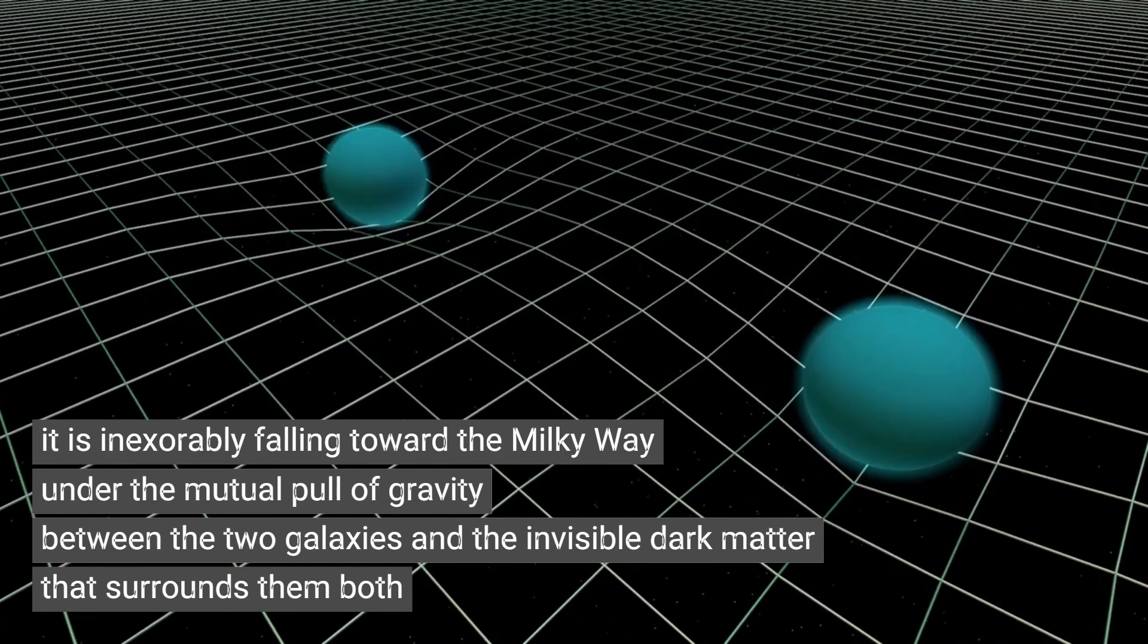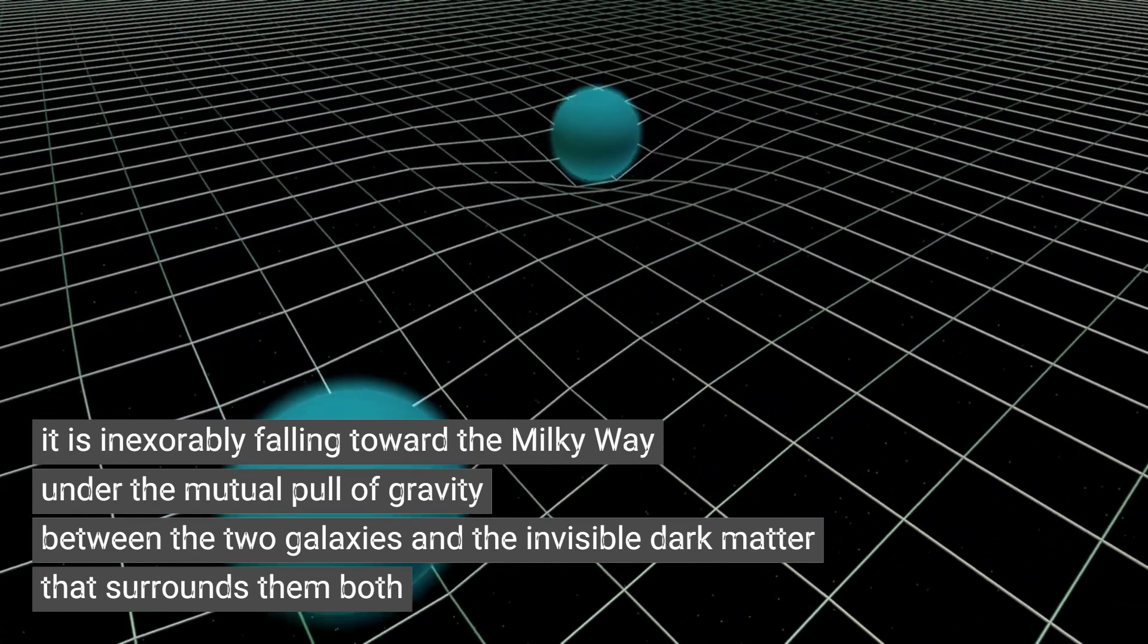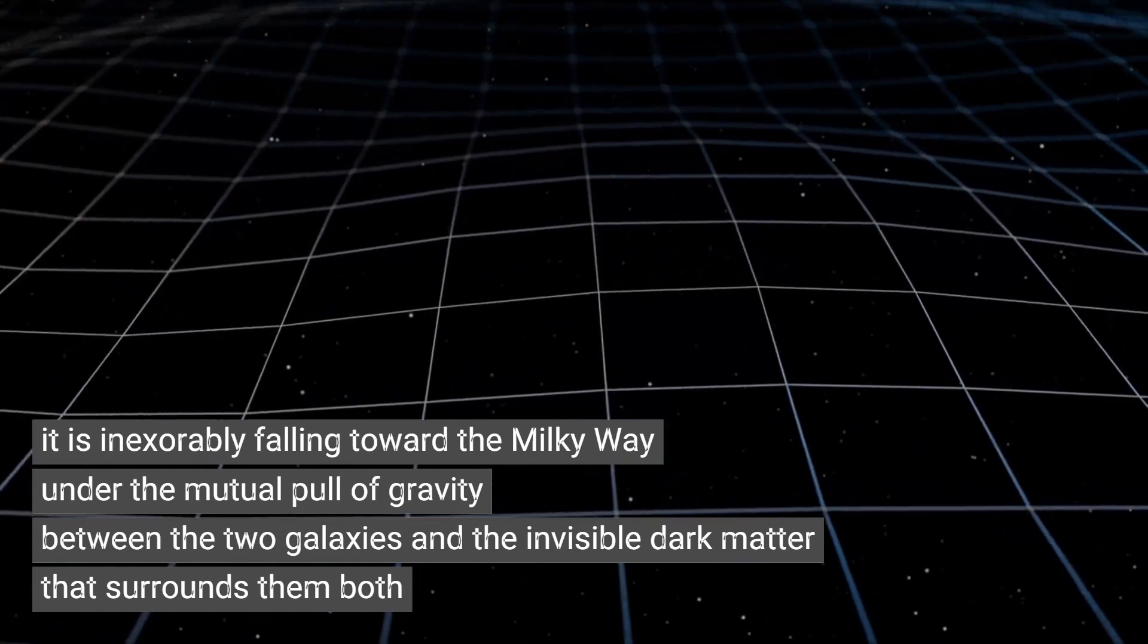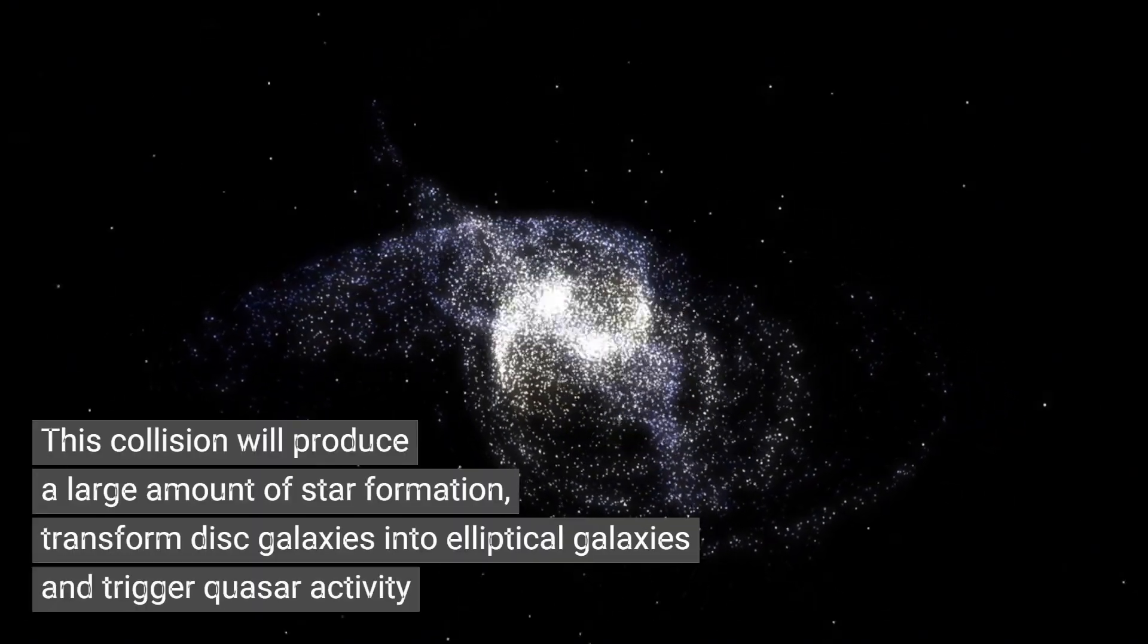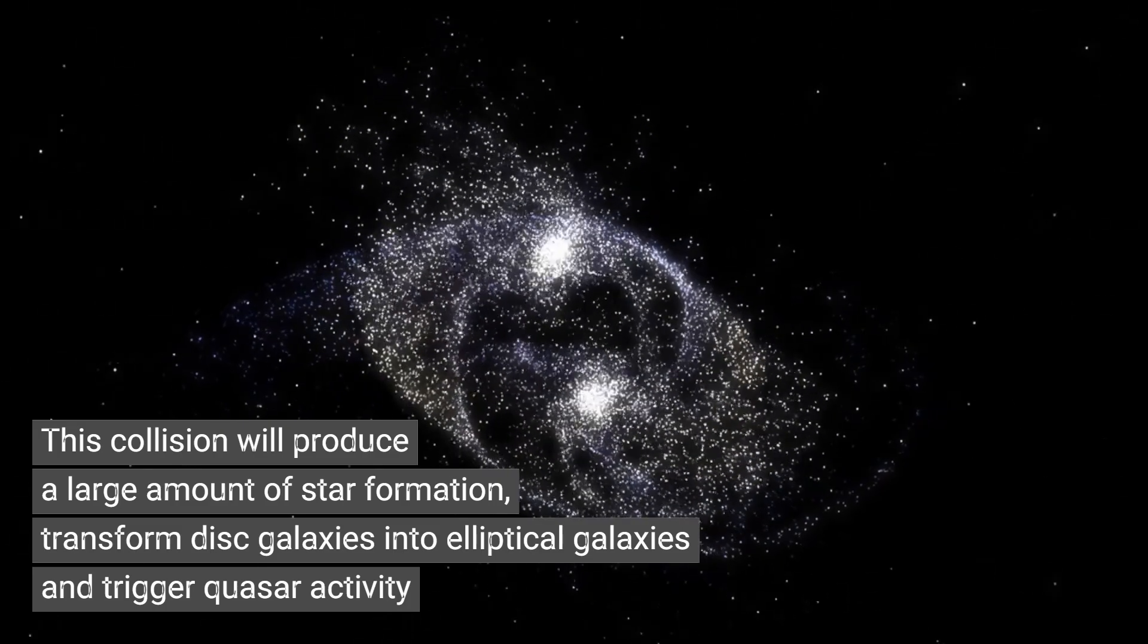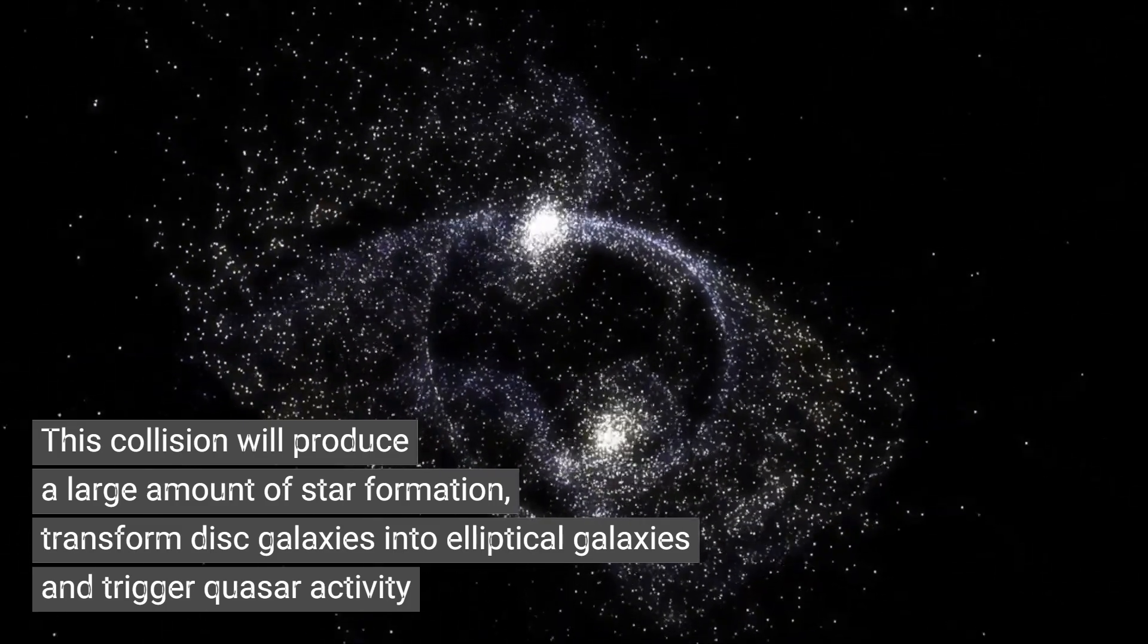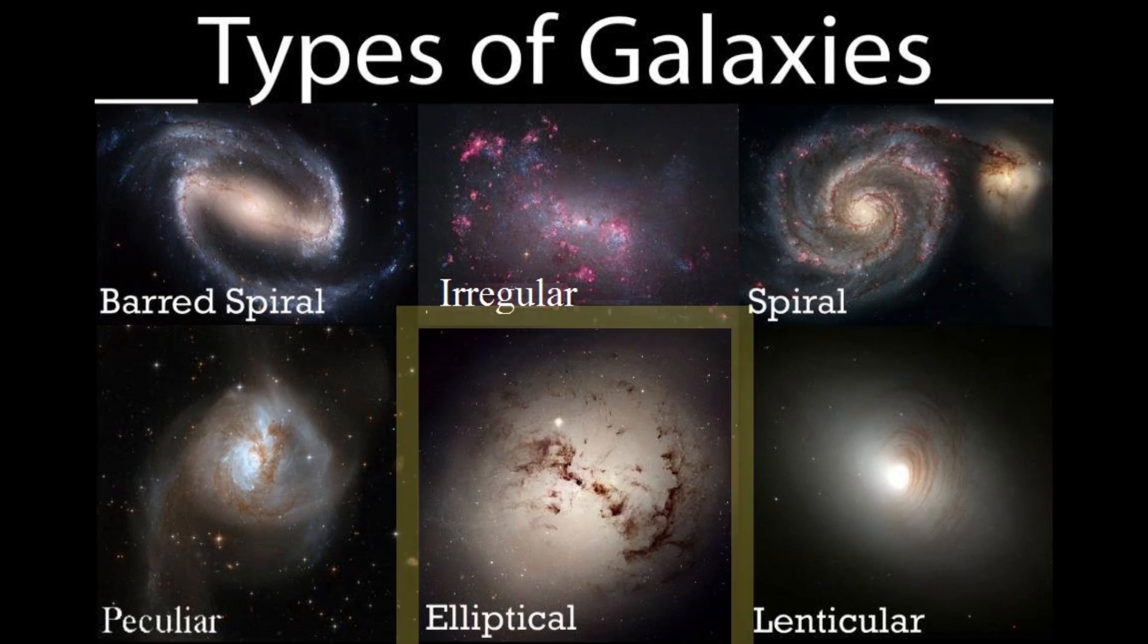The gravitational forces between the two galaxies will cause them to distort, creating tidal tails of stars and gas that stretch out into space. As the galaxies continue to interact over billions of years, they will eventually merge, forming a new, larger galaxy. This process is known as a galactic merger.